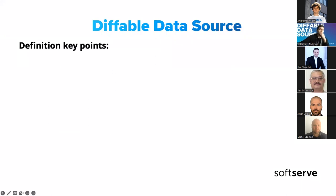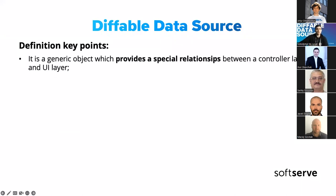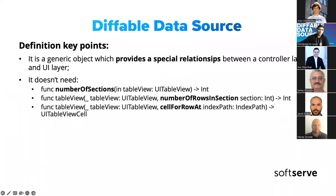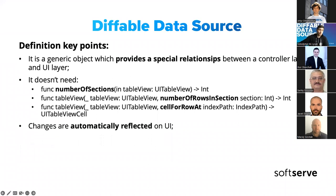So, diffable data source. Simply put, diffable data source is a generic object which provides a special relationship between the controller layer and the UI layer. It was introduced in iOS 13. It removes the need for those three methods and querying your data every time to get that information. You just provide the data to it, and the UI layer will automatically get every piece of information it should know. When you need to change the data source data, you just do simple steps, which I will describe and show a bit later. Then you apply that data to the data source, and that's it.